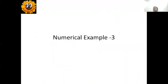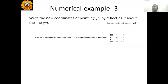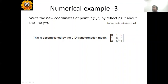Numerical example three: write the new coordinates of point P(1,2) by reflecting it about the line Y equals X. This is a reflection problem, accomplished using a two-dimensional transformation matrix. For Y equals X, the standard transformation matrix to remember is: row one is 0, 1, 0; row two is 1, 0, 0; row three is 0, 0, 1. This differs from reflection about the X or Y axis — for Y equals X, the off-diagonal elements swap. This expression has already been discussed in class.